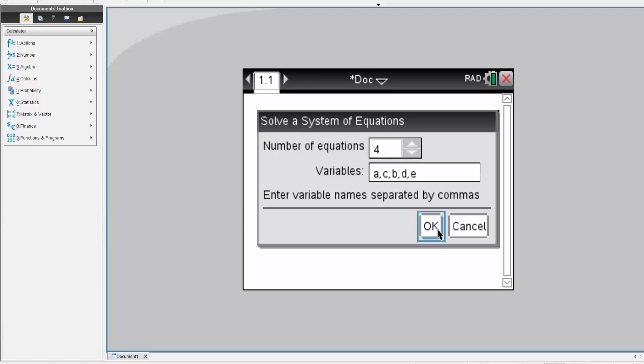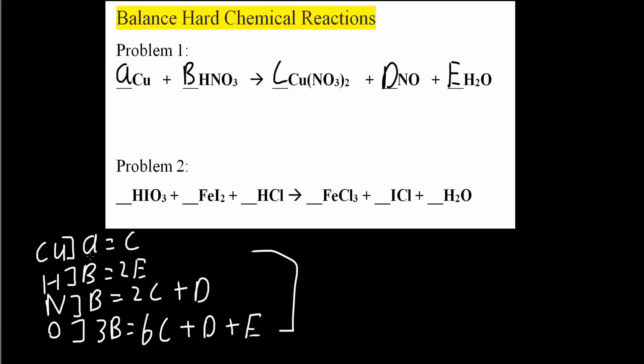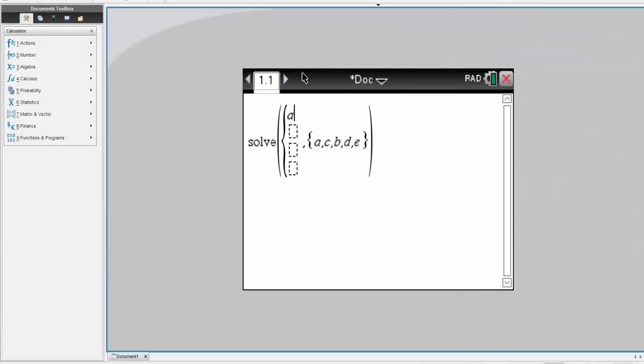One, two, three, four, five. Okay. Now I just write the equations. Let's go back quickly. So these are the equations I will write. So the first equation is A is equal to C, then B is equal to two E. So we will write this down. A is equal to C and B is equal to two times E.